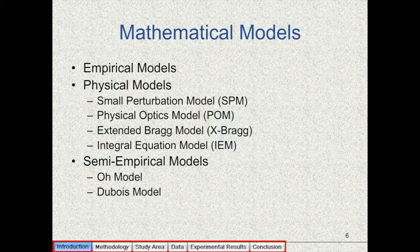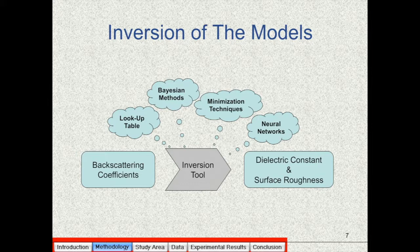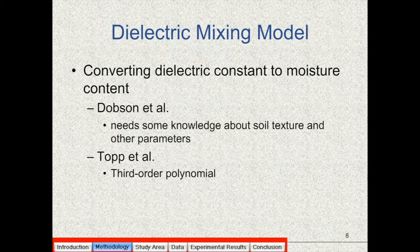For this purpose, usually a mathematical model is used which can be empirical, physical or semi-empirical. For this study we have used a physical model called integral equation model which receives the dielectric constant of soil and its surface roughness and yields backscattering coefficient. So if you want to estimate the dielectric constant and surface roughness of soil, we have to use an inversion technique. As soon as we have a dielectric constant of soil, we can convert that to volumetric soil moisture value using a dielectric mixing model. For this study we have used a Topp model which is simply a third order polynomial and doesn't need any information about soil texture.